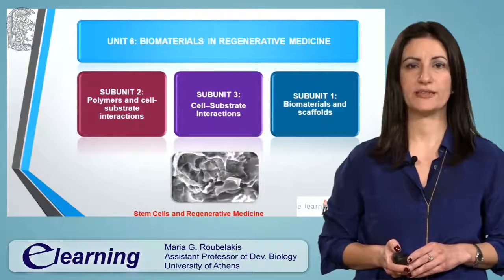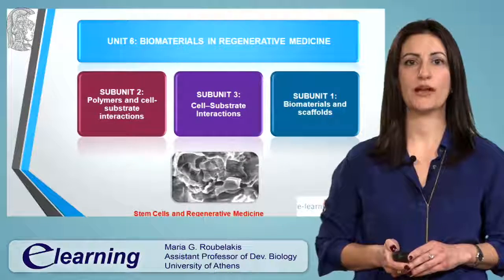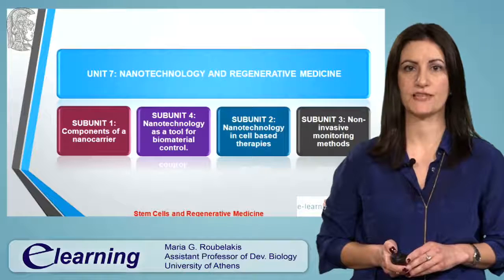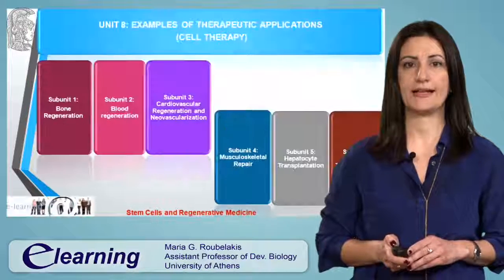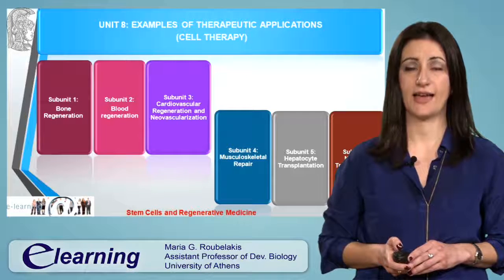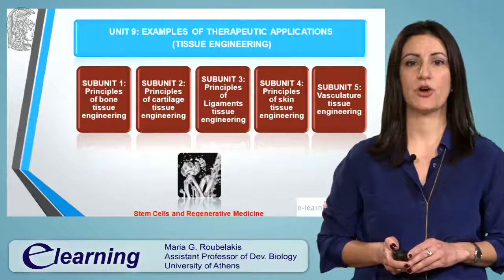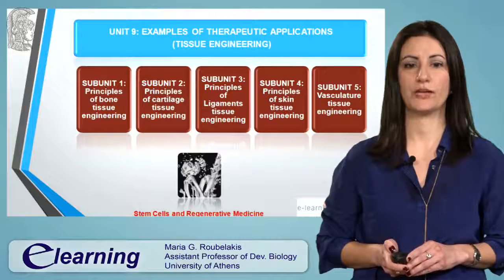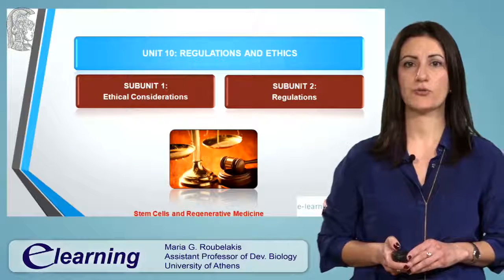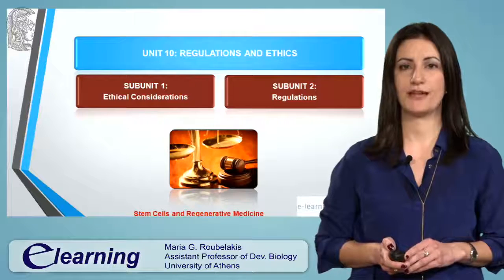The use of biomaterials in regenerative medicine is discussed in the sixth unit, whereas the role of nanotechnology in regenerative medicine is introduced in the seventh unit. Examples of cellular therapy applications are discussed in the eighth unit. Unit 9 describes examples of tissue engineering therapeutic approaches. And finally, Unit 10 focuses on the regulation and ethics related to stem cells and regenerative medicine.